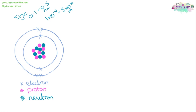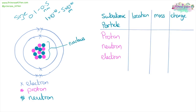Inside our atom we have protons and neutrons, and in the shells on the outside we have electrons. This bit in the middle is called the nucleus. Protons and neutrons are located in the nucleus, whereas electrons are in the outer shells. Protons have a mass of one, neutrons have a mass of one, and electrons are incredibly tiny — their mass is one two-thousandths that of a proton or a neutron. Protons have a charge of +1, neutrons have no overall charge, and electrons have a charge of −1.